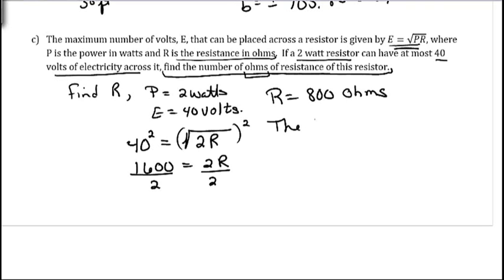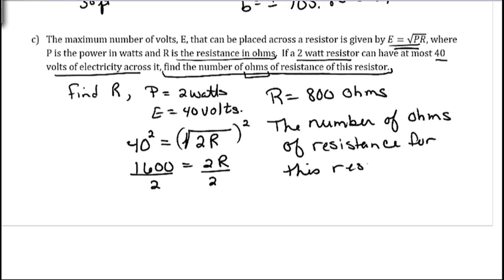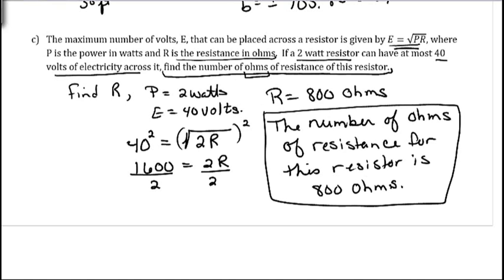So, the number of ohms of resistance for this resistor is 800 ohms. And basically, the best way to answer the question with your sentence is just to rephrase the question as a sentence with your answer in it.